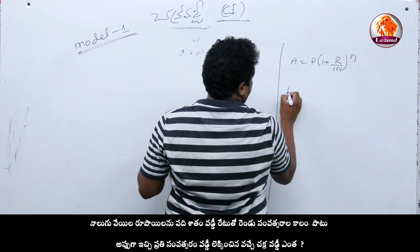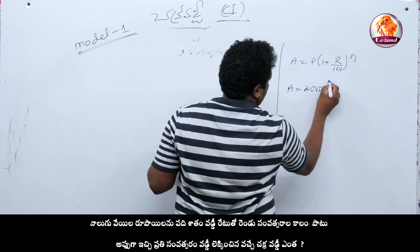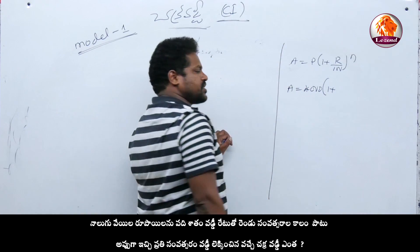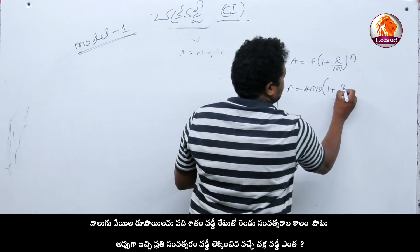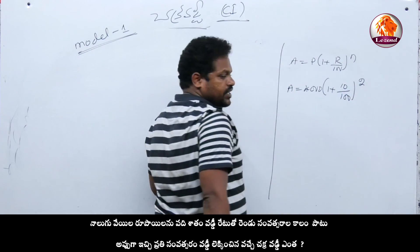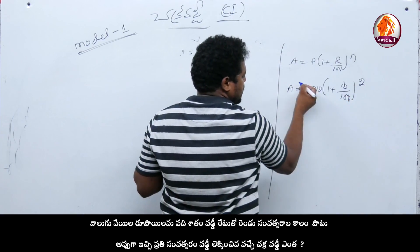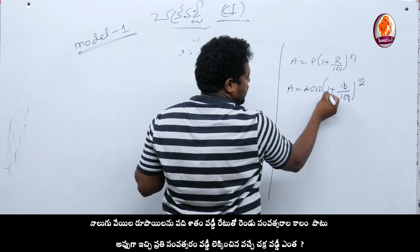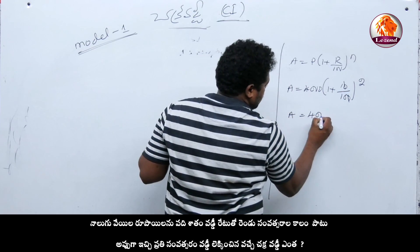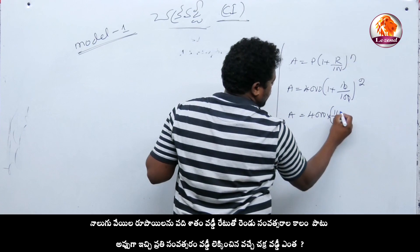Samachraniki anadakabatti R by 100 all to the power N. A is equal to P of 4000, 1 plus rate of interest padishatam by 100, column 2 years. Then simplification — 0, 0 cancel, 10 into 1 is 10, plus 1 is 11. So then A is equal to 4000 into 11 by 10 whole square.